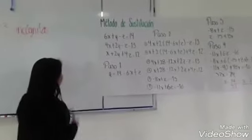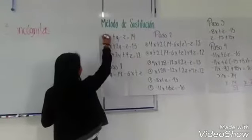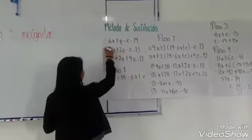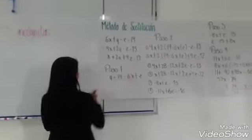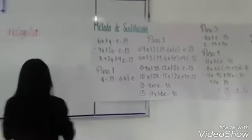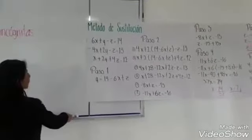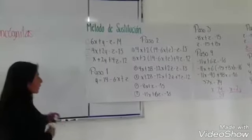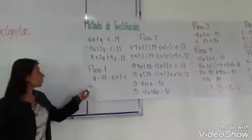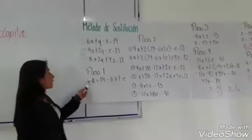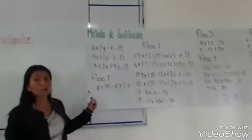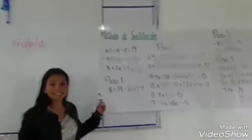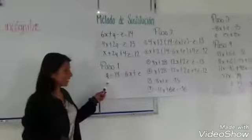Un ejemplo es este, que tiene las tres ecuaciones y se va a tomar la que se utiliza. Uno de los primeros pasos es despejar con una de las tres incógnitas.